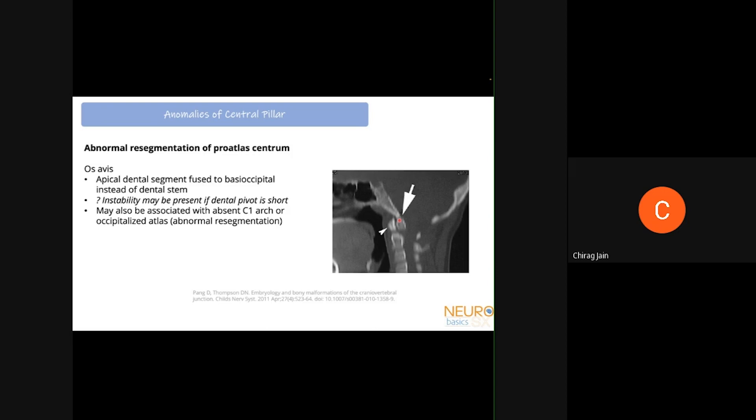Another abnormality is os avis, arising from abnormal resegmentation of the pro-atlas centrum. Instead of the normal resegmentation separating the skull base from the spine, the segmentation line shifts caudally, so the apical dental segment ends up fused to the basi-occiput rather than to the dental stem. Instability may or may not be present depending on whether the dental pivot is short or tall.